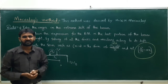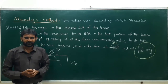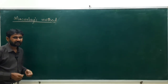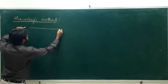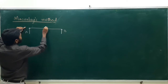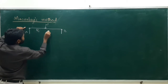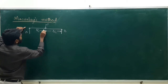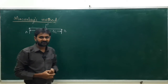By taking a simply supported beam with a central point load, we will solve an equation and find out the maximum bending moment using Macaulay's method. The standard case: I have a simply supported beam A-B with a load W at the central point. Let this be L/2 and L/2. We have to find out the maximum slope and deflection using Macaulay's method.